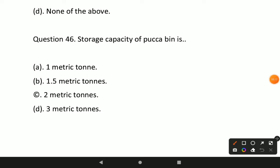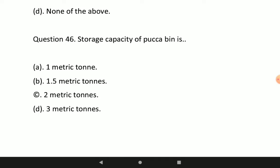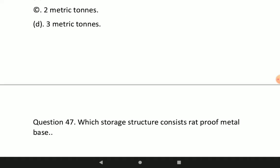Question number 46: the storage capacity of a pukka bin is? The correct option is one metric ton — one metric ton is the storage capacity of a pukka bin.